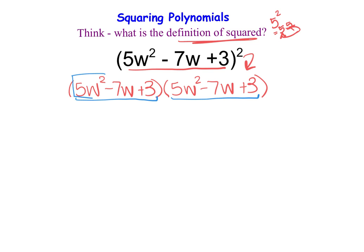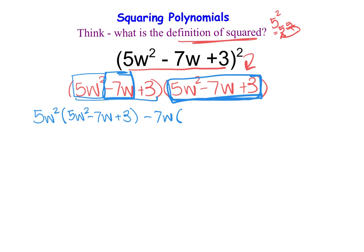So I'm going to start with 5w squared, and I'm going to take 5w squared and multiply it by this whole expression here, which is 5w squared minus 7w plus 3. And I'll distribute that out in a second. I just want to keep writing. So here I'm now going to take negative 7w and I'm going to multiply it by everything in this parenthesis here. So I have 5w squared minus 7w plus 3.